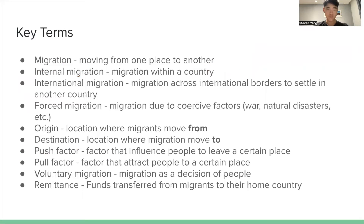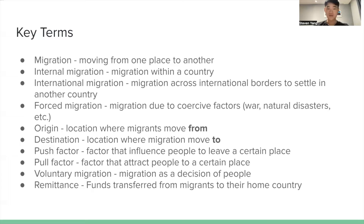These are the important key terms that you need to know. Migration is moving from one place to another. Internal migration is migration within a country. International migration is migration across international borders to settle in another country. The origin is the location where migrants move from, and the destination is the location where the migrants move to.